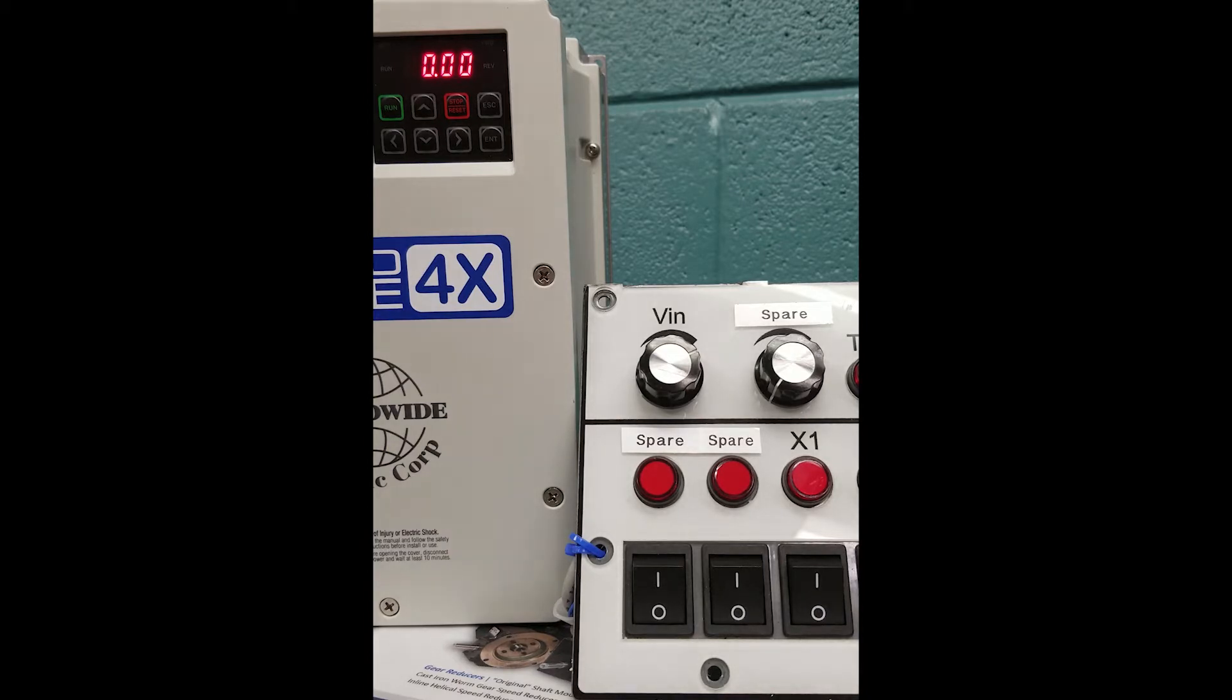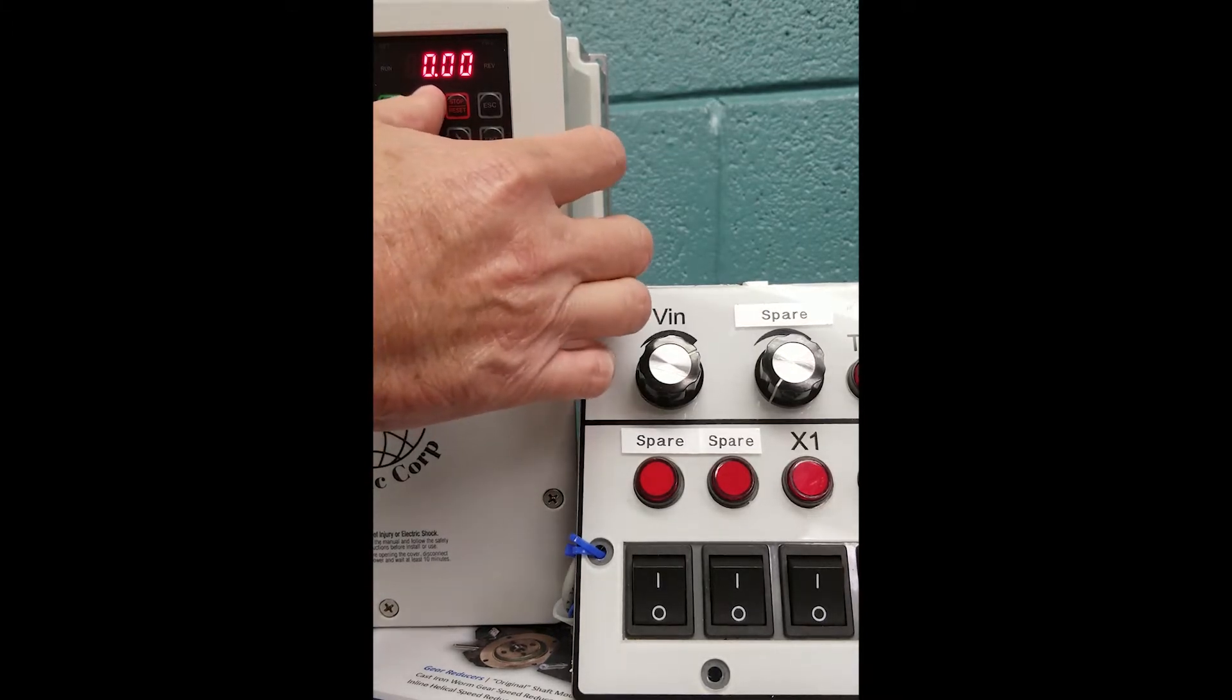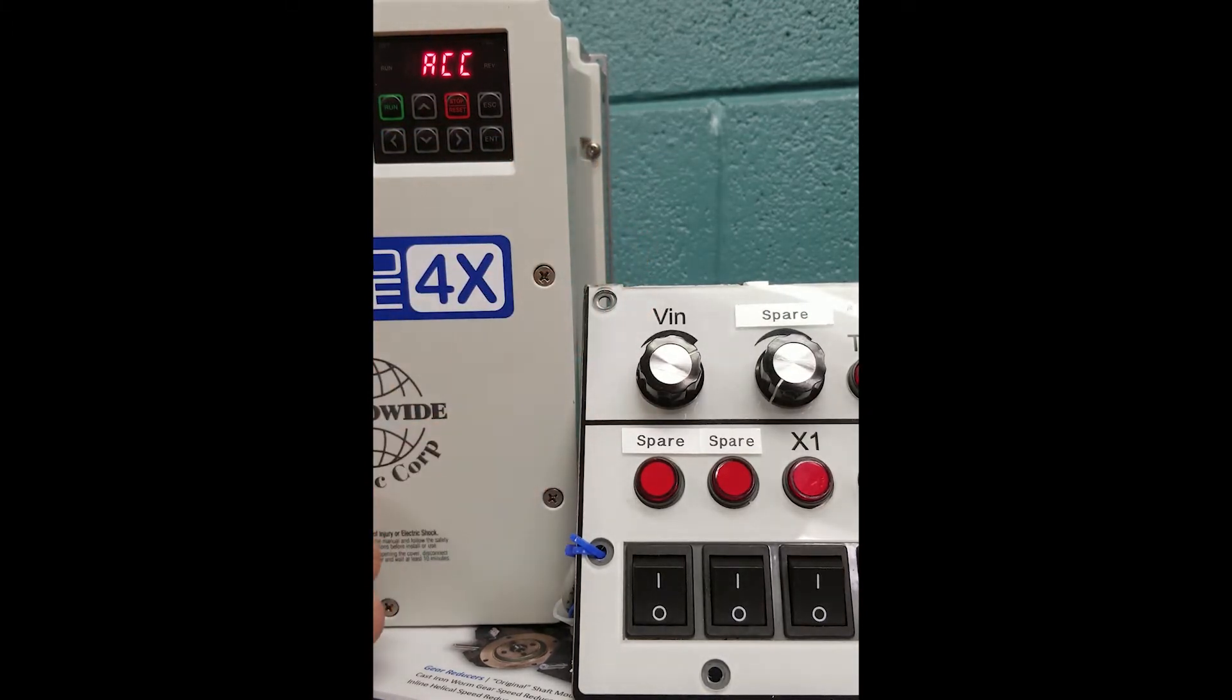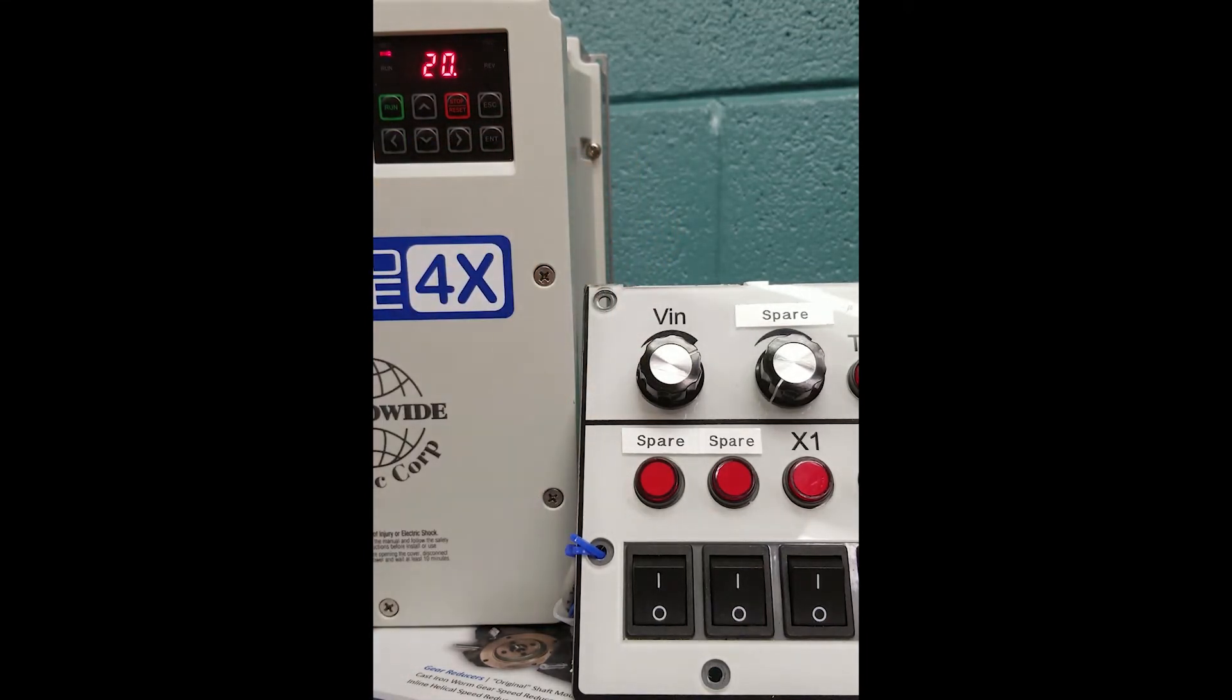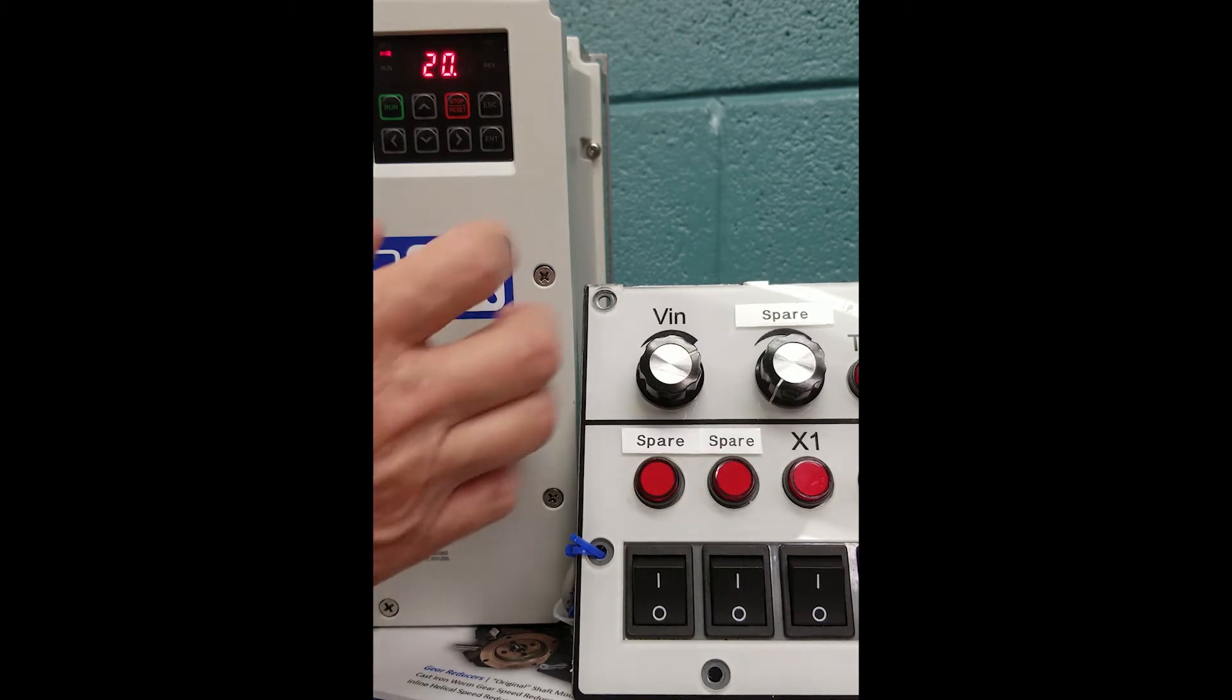Now we will begin our programming. To do so we must hit the up arrow to see ACC to set our acceleration time. We will enter into our ACC, factory default at 20 seconds on this VFD. We're going to change that to 5 seconds.